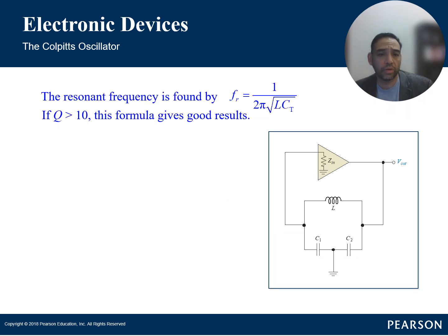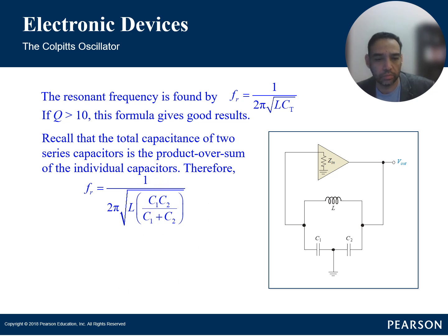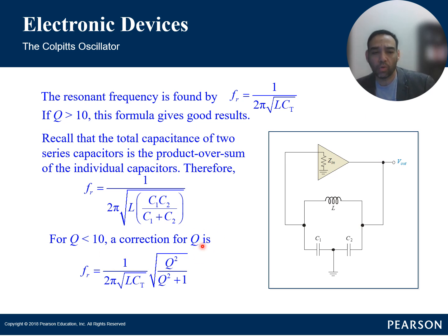The resonant frequency formula is: f = 1 / (2π × √(L × CT)), where CT is the total capacitance. This gives good results when Q > 10. Recall that for two series capacitors, total capacitance is the product over the sum. If Q < 10, a correction factor is applied: multiply by √(Q² / (Q² + 1)).